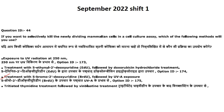Now for September 2022, Shift 1. First question: if you want to selectively kill newly dividing mammalian cells in a cell culture assay, which method will you use? Treatment with 5-bromo-2-deoxyuridine (BrdU), which is an intercalating agent, followed by UVA exposure. The answer is option 3.